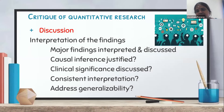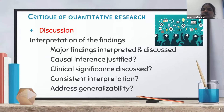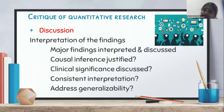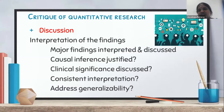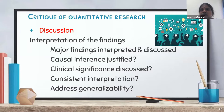In the discussion section, whatever findings have been obtained must be discussed. In the interpretation of the findings, you check whether the major findings are interpreted and discussed, whether there is any causal inference and if it is justified, whether the clinical significance of the present topic is explained, whether the interpretation is consistent, and whether the findings can be generalized. These are all the questions to be answered in the discussion part when you do a critical review.